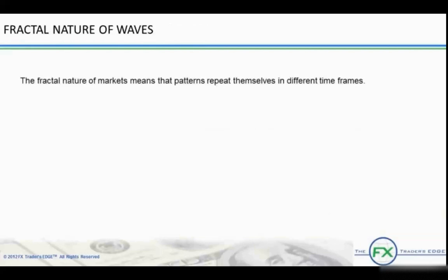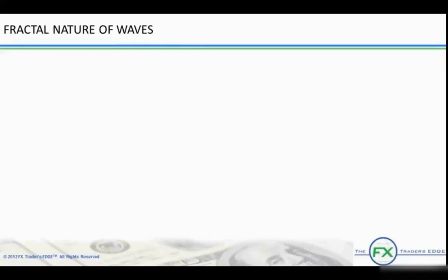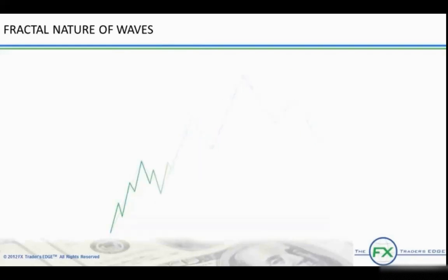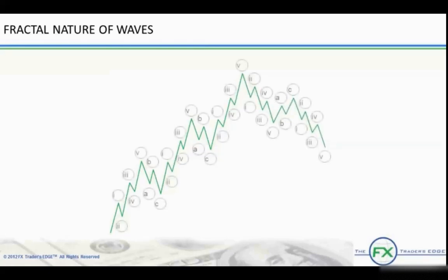The fractal nature of markets means that patterns repeat themselves in different time frames. Waves of any degree in any series are made up of waves of a lesser degree. Just as nature reproduces in the same patterns of different degrees, so too do market patterns. Notice this five-wave sequence subdividing into waves of a lesser degree, found in a smaller time frame. Whether a monthly, weekly, daily, 4-hour, hourly, or 15-minute chart, the patterns repeat themselves. This enables one to trade any time frame using the Elliott Wave principle.